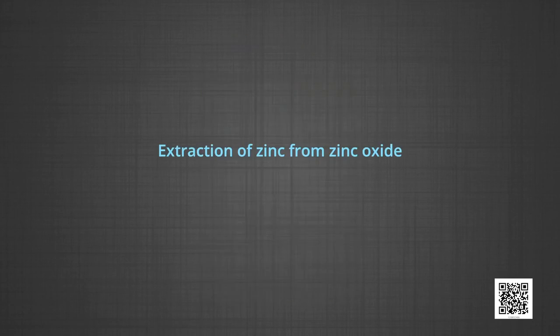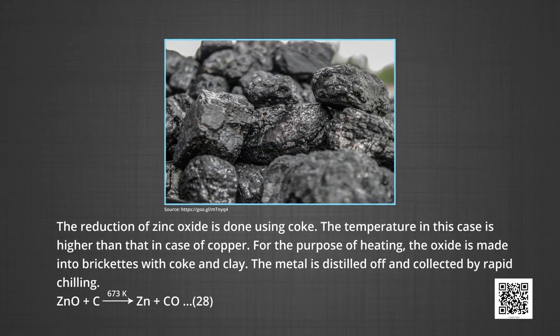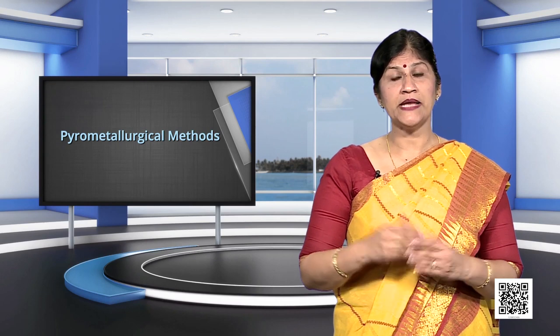Now let us understand the extraction of zinc from zinc oxide. The reduction of zinc oxide is done using coke. The temperature in this case is higher than that in the case of copper. For the purpose of heating, the oxide is made into briquettes with coke and clay. ZnO reacts with coke at 1673 K to form zinc and carbon monoxide. The metal is distilled off and collected by rapid chilling. These were the pyrometallurgical methods of obtaining metal from their oxides.